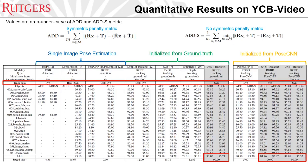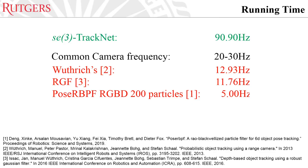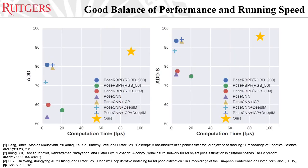Here are the quantitative results on the YCB video dataset. We can see that SC3 TrackNet achieves the state-of-the-art on this benchmark using the area under the curve of ADD and ADD-S metrics. For the running time, SC3 TrackNet is also the fastest — it can run as fast as 90Hz, which is far more efficient than needed for real-time usage since common camera frequency is about 20 to 30Hz. Overall, SC3 TrackNet has a good balance of performance and running speed. The left figure shows the result using the ADD metric, and the right one shows the ADD-S metric. Under both metrics, SC3 TrackNet outperforms other approaches by a large margin in both running time and performance.